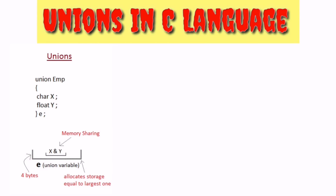Then we use printf with %d for e.x and printf for e.y. Since both x and y point to the same memory location, when you assign a value to x and then print y, y also reflects the same memory location. So we print 10. This shows that many members are defined, but only one element holds the value at a time.